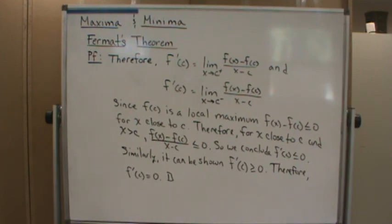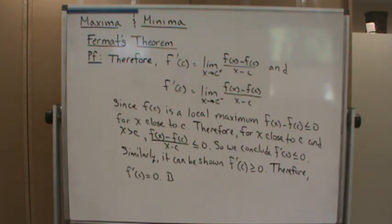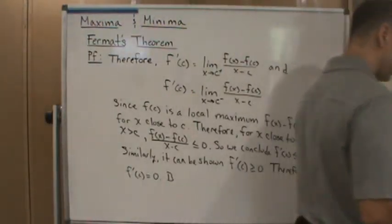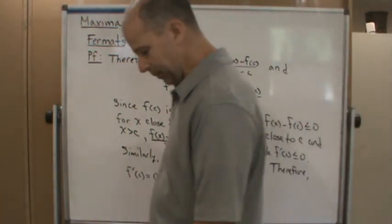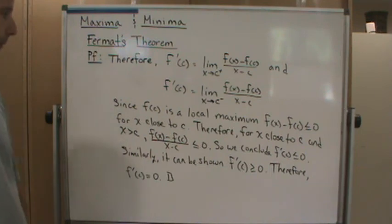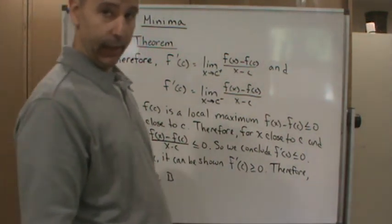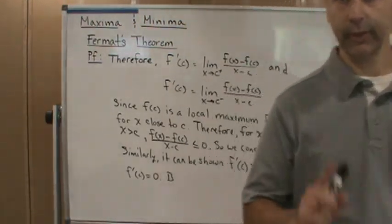From Fermat's theorem, what we can conclude is that if f has a local extremum at c, then either f prime of c is equal to zero, or f prime of c is undefined. In other words, local extrema can only occur at critical points. That's the result — Fermat's theorem basically says that local extrema can only happen at critical points, and that's what we're going to use. Have a great day.